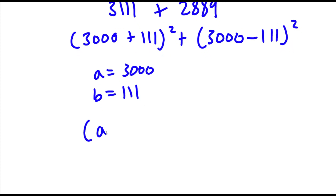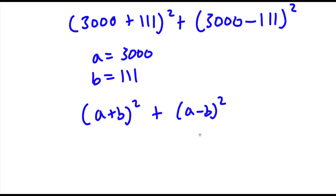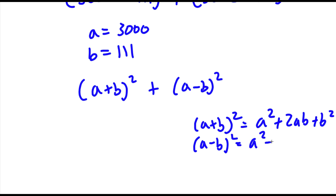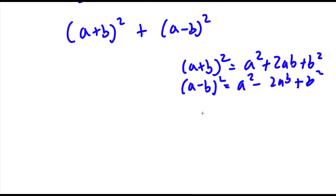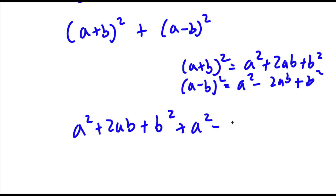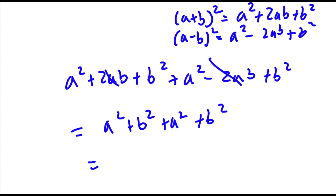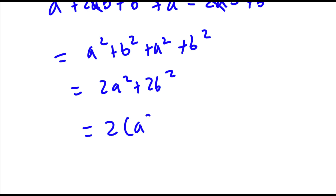Now I'm going to set a equal to 3,000 and b equal to 111. So substituting these in I get (a plus b) squared plus (a minus b) squared. Now (a plus b) squared equals a squared plus 2ab plus b squared, and (a minus b) squared equals a squared minus 2ab plus b squared. Adding these two together, the 2ab terms cancel out, leaving a squared plus b squared plus a squared plus b squared, which equals 2a squared plus 2b squared. Factoring out 2 gives 2 times (a squared plus b squared).